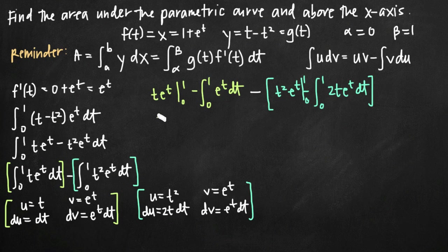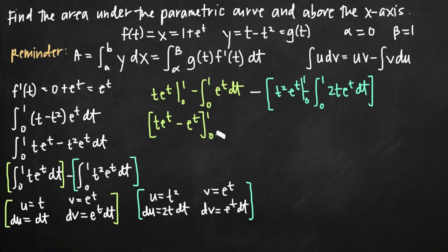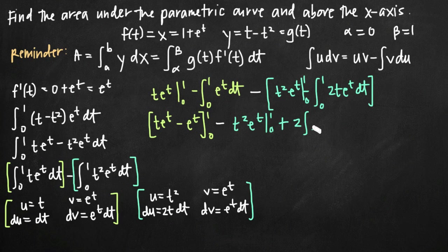Working through each part: the first integral becomes t e to the t minus e to the t evaluated on 0 to 1. For the second half, we have t squared e to the t on the interval 0 to 1. Because of the double negative sign, that becomes plus 2 times the integral from 0 to 1 of t e to the t dt.